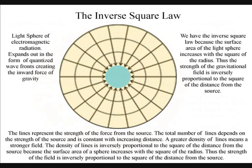We have the inverse square law because the surface area of the light sphere increases with the square of the radius. Thus the strength of the gravitational field is inversely proportional to the square of the distance from the source.